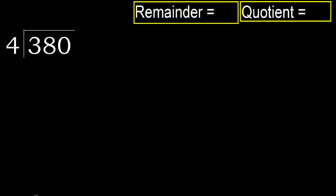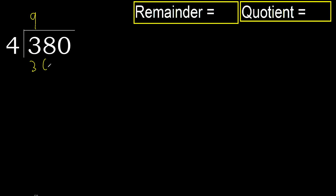380 divided by 4. 3 is less, therefore next. 38 is not less, therefore with 38. 4 multiplied by which number is nearest to 38 but not greater? 4 multiplied by 9 is 36, which is not greater. Subtract.